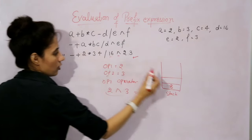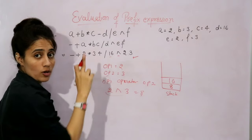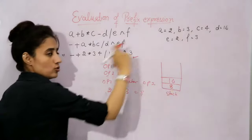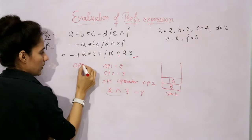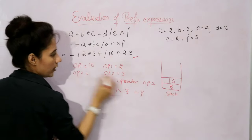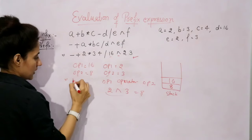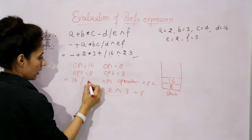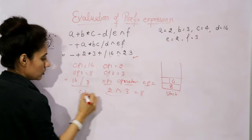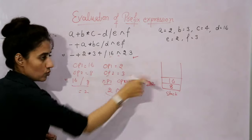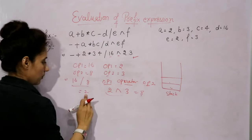After this we have 16 — this is an operand, simply push it. After this we have again an operator — divide. Pop out two operands: operand one is 16, operand two is 8. Now: 16 divided by 8 equals 2. Push this result 2 into the stack. We have popped out 16 and 8, and now we push 2. In the stack I have only one element.